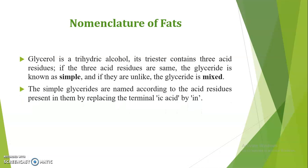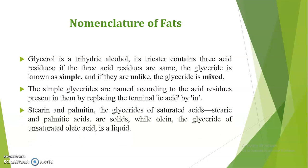Simple glycerides are named according to the acid residues present in them by replacing the terminal '-ic acid' with '-in'. For example, stearin and palmitin — you can see the suffix '-in' at the end of these names. These are glycerides of saturated acids like stearic acid and palmitic acid. From the free fatty acid, we remove '-ic acid' and add '-in'. Stearin and palmitin are solids, while olein — the glyceride of unsaturated oleic acid — is a liquid.